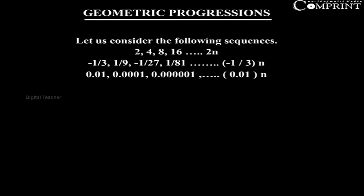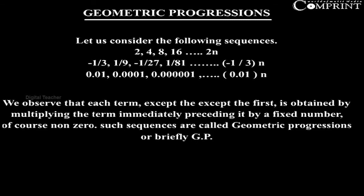Geometric Progression. Let us consider the following sequences. We observe that each term except the first is obtained by multiplying the term immediately preceding it by a fixed number, of course non-zero.